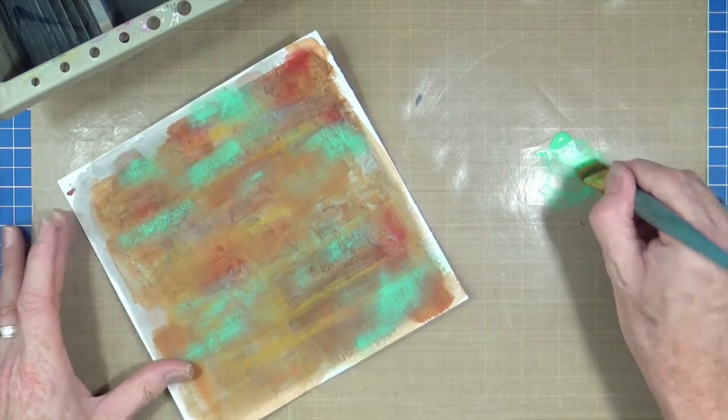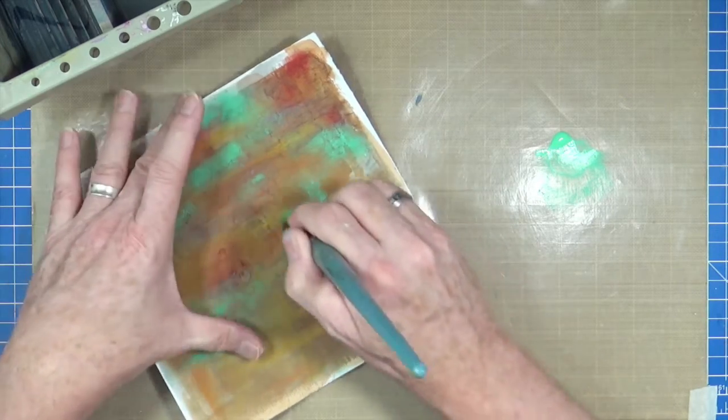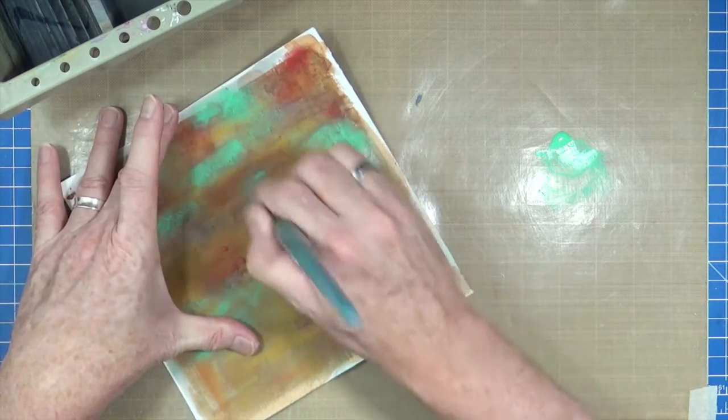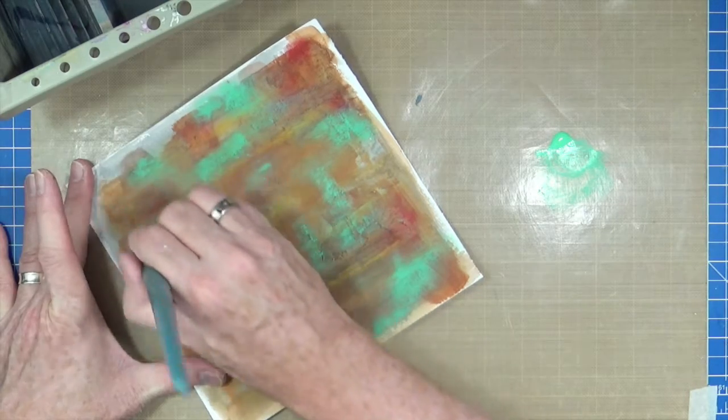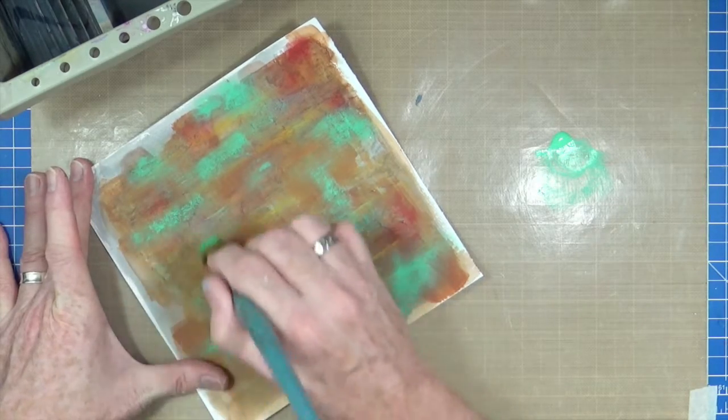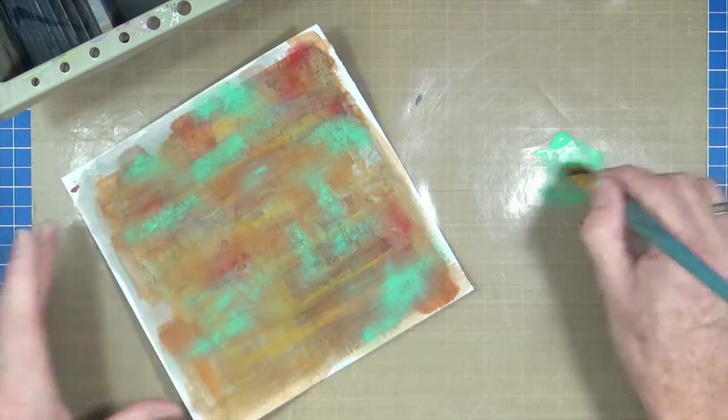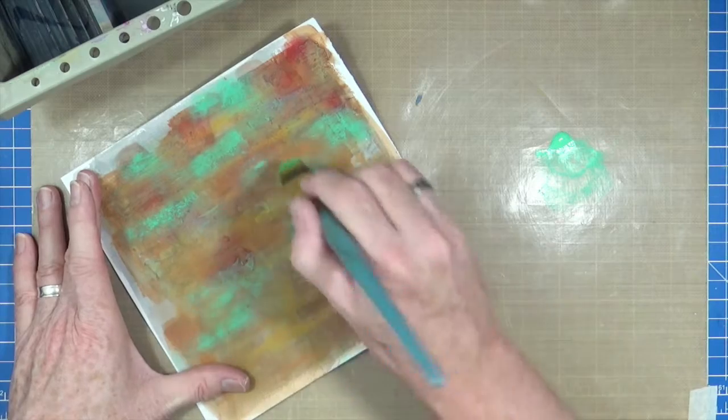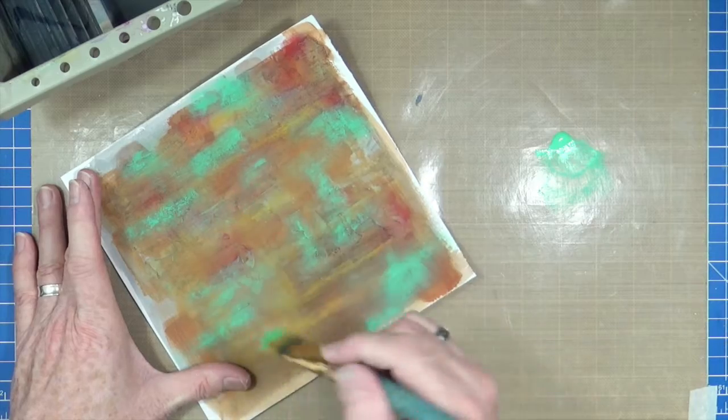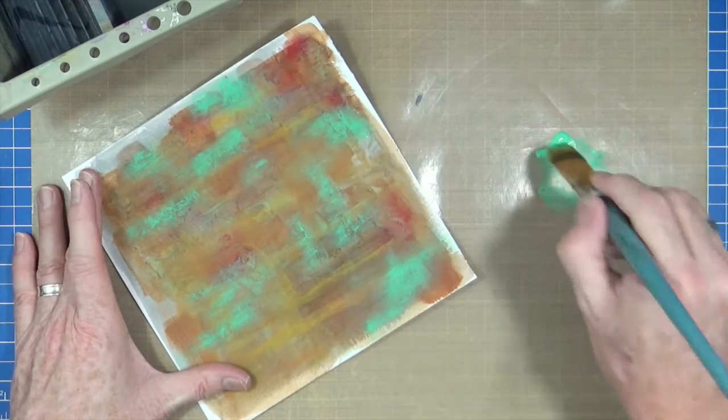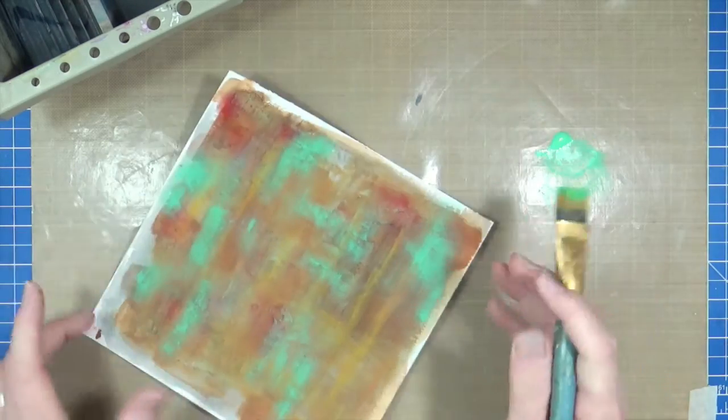And then I'm just going to go back over. Just in some areas. With a bit more paint. And then just lighten that up. Look at that. And then we can turn it. Just a little bit. And then maybe do a few. Strokes that way. Just pick up a little bit of detail. From that texture paste. Just dry brushing.